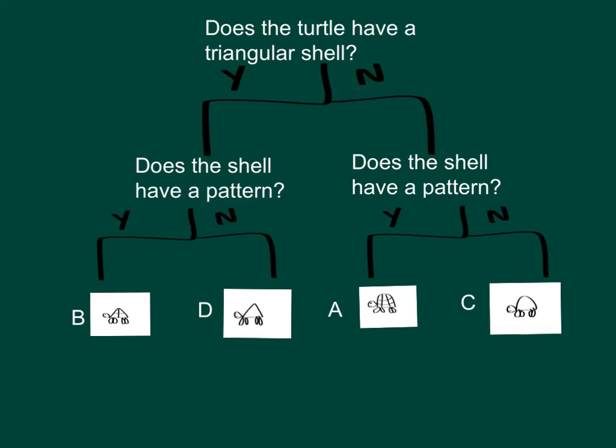If it's yes for both questions, then it's going to be B, this one here. If it's yes then no, it's D. If it's no then yes, it's A. If it's no then no, it's C.